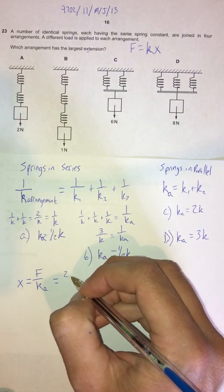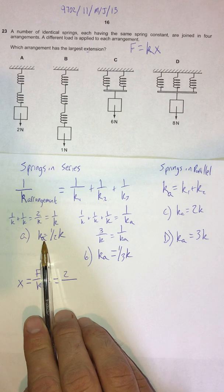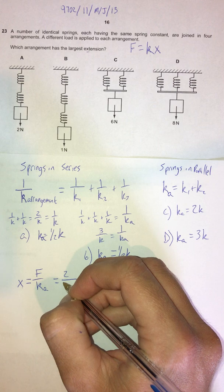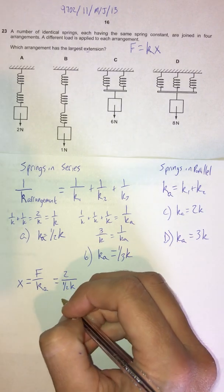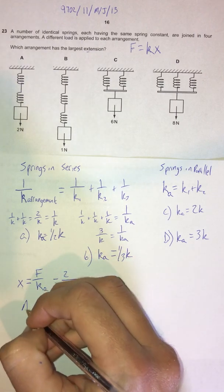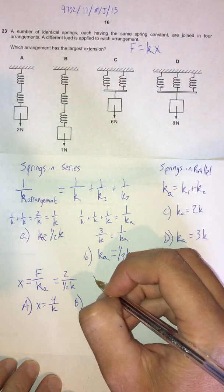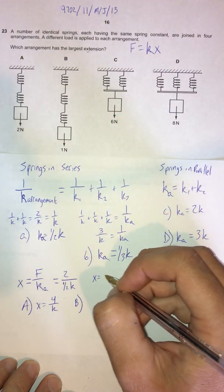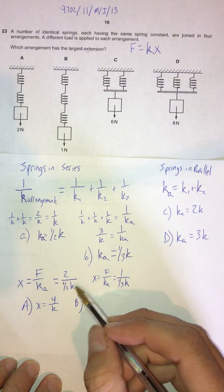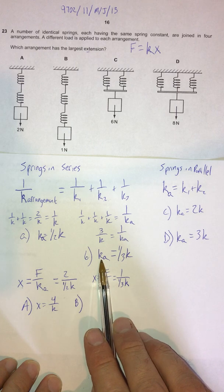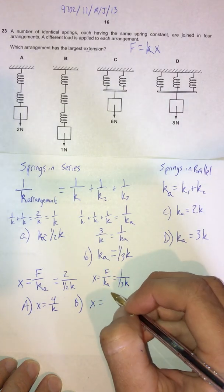For choice A: the force is 2 N and the effective spring constant is k/2, so x = 2 / (k/2) = 4/k. For choice B: the force is 1 N and the effective spring constant is k/3, so x = 1 / (k/3) = 3/k.